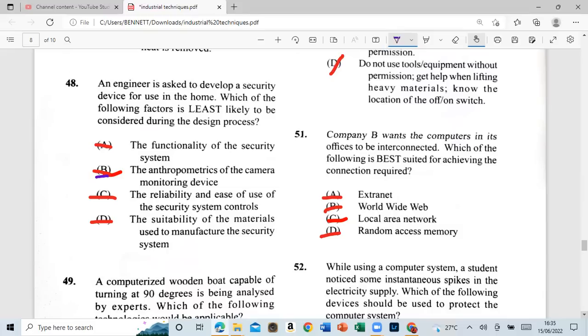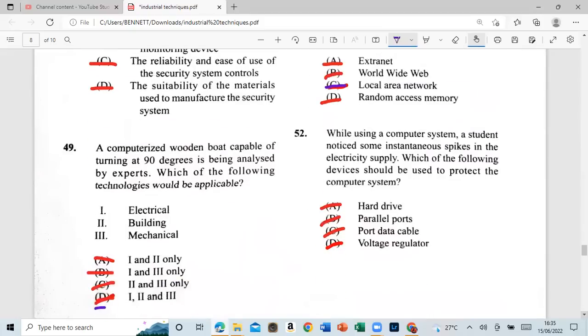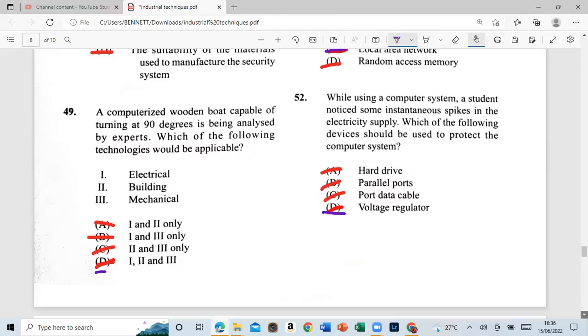And that's A: where PPE, PPE at all times, adhere to the signs in the workshop. And the signs to tell you what not to do on all of that. Right? Everything must in a workshop. The instructions, everything. All right. So let's move on to 51. A complete company. B. Want the computers in its offices to be interconnected. Which are the following best suited for achieving the connected required? Okay, is it extranet, worldwide with local area network, or random access memory? And that's the local area network. Or extranet outside.